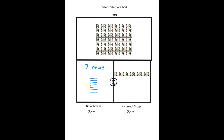We can show seven rows of penguins and ten penguins in each row on a factor-factor-total grid with manipulatives. We indicated the seven rows with seven lines, and you can certainly start off by putting the manipulatives straight onto a large factor-factor-total grid.